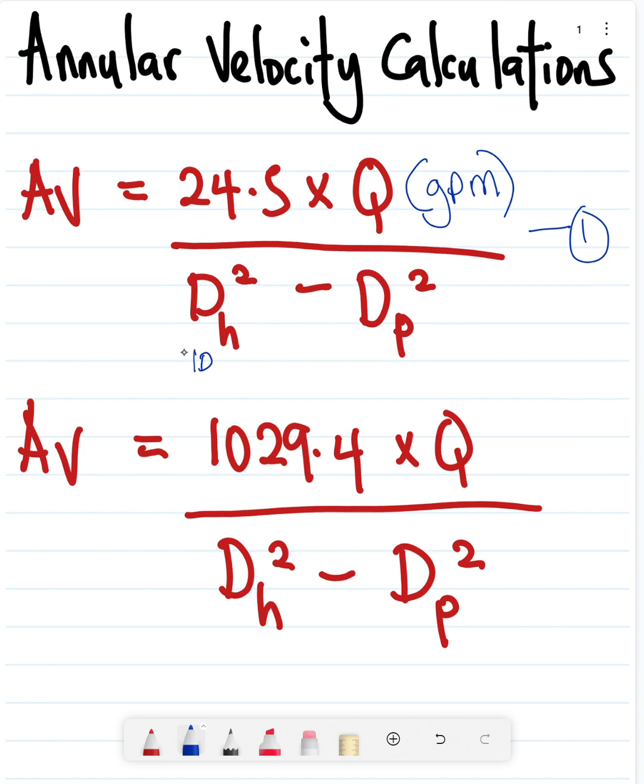So that's the hole ID. This is the hole ID and this is the pipe OD.